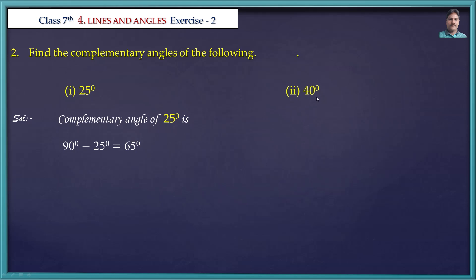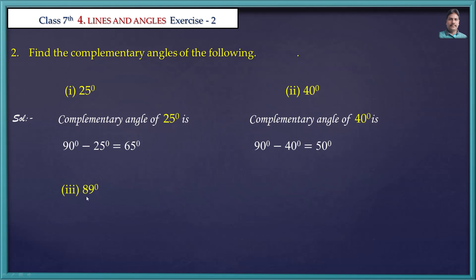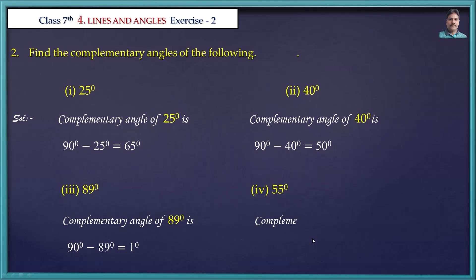Next problem: 40 degrees. The complementary angle of 40 degrees is 90 minus 40, that is 50 degrees. Next: 89 degrees. The complementary angle of 89 degrees is 90 minus 89, that is equal to 1 degree. Next: 55 degrees. The complementary angle of 55 degrees is 90 minus 55, that is equal to 35 degrees.